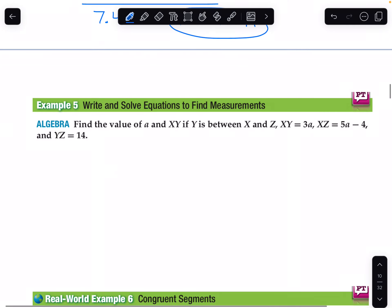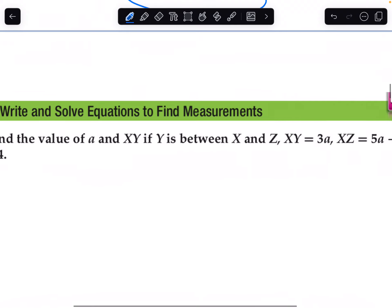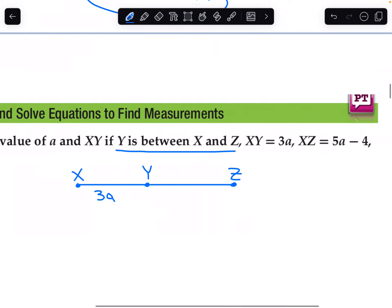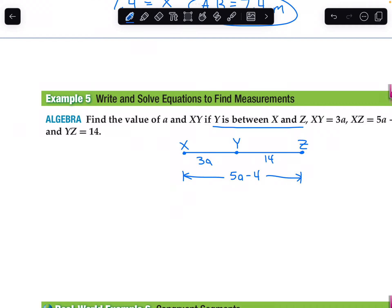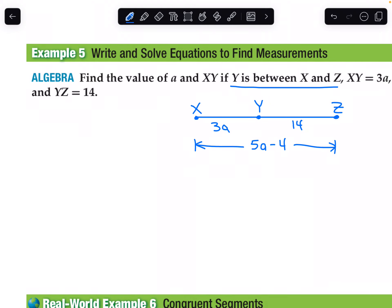Example 5, write and solve equations to find measures. It's helpful to draw a diagram. Find the value of A and XY if Y is between X and Z. So here's our diagram: X on one end, Z on the other. Y is between. XY is 3A. The whole distance XZ is 5A minus 4. And YZ is 14.